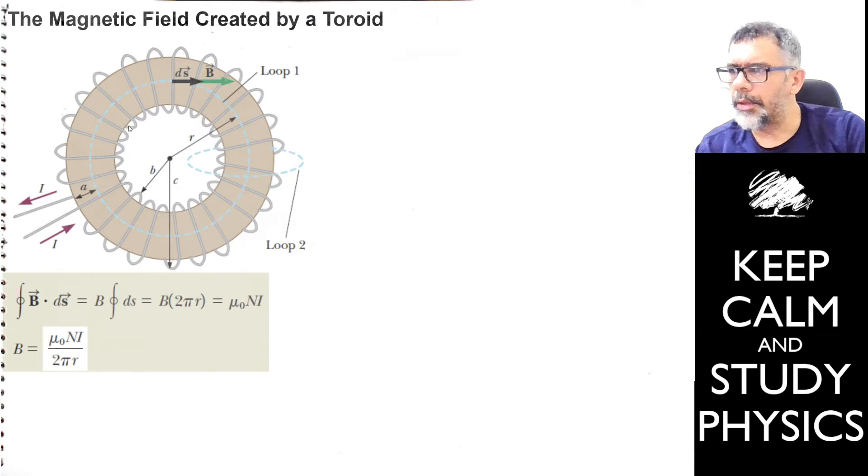Inside the toroid, and thinking that right at the center of the toroid, we have the magnetic field B, and it is the same everywhere on this central circle that crosses through the geometrical center of the toroid like this.